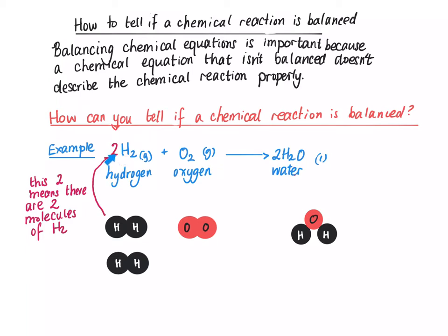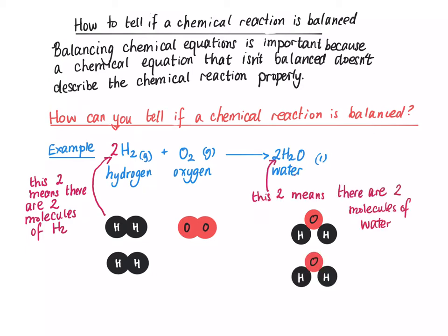Before the hydrogen and before the water, there are numbers. This two means there are two molecules of hydrogen — one molecule and a second molecule of hydrogen. Similarly, there's a two before the water, which means there are two molecules of water — that's one molecule and that's the second molecule.